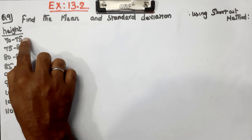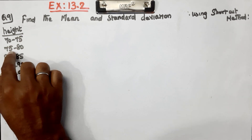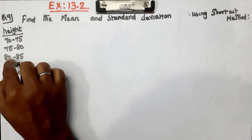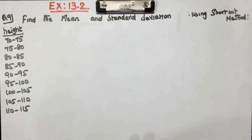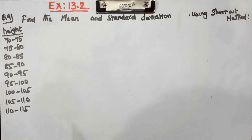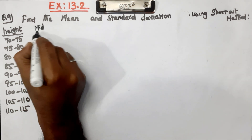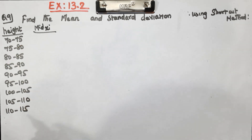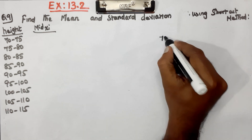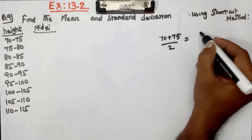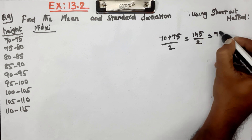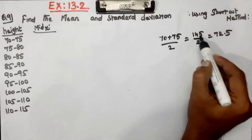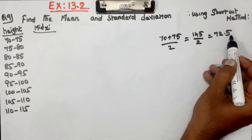The class intervals are: 70 to 75, 75 to 80, 80 to 85, 85 to 90, 90 and beyond. Now we find the mid value. For the interval 70 to 75, the mid value is (70 + 75) divided by 2, which is 145 divided by 2, giving 72.5.